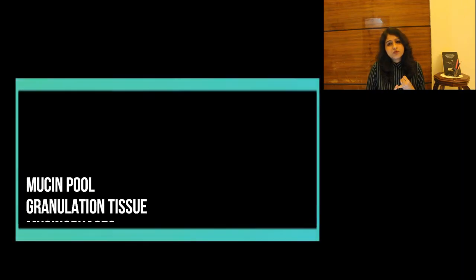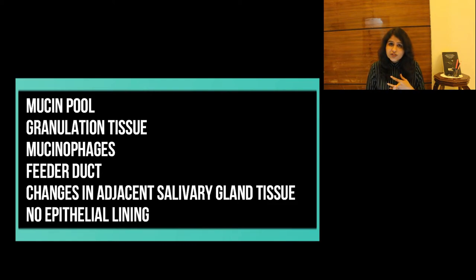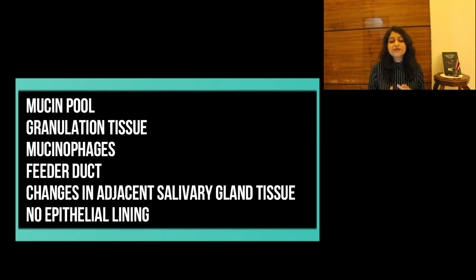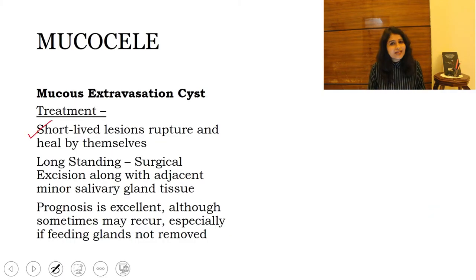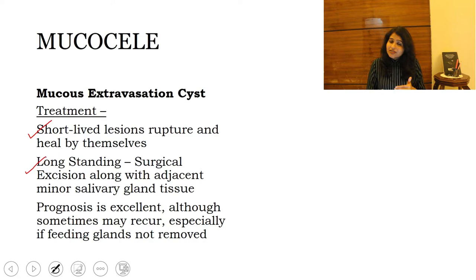To summarize the histopathological features: mucin pool surrounded by granulation tissue, presence of mucinophages, and sometimes a ruptured feeder duct may be visible. Adjacent salivary gland tissue may show chronic inflammatory cell infiltrate and dilatation of ducts. Importantly, there is no epithelial lining — that's why it's a pseudo cyst. Long-standing lesions may show compressed connective tissue wall instead of granulation tissue. Regarding treatment: short-lived lesions rupture and heal themselves. Long-standing lesions are surgically excised, and the surgeon must always excise the adjacent salivary gland tissue to ensure the feeder duct is not left behind, as that leads to recurrence. Prognosis is excellent.